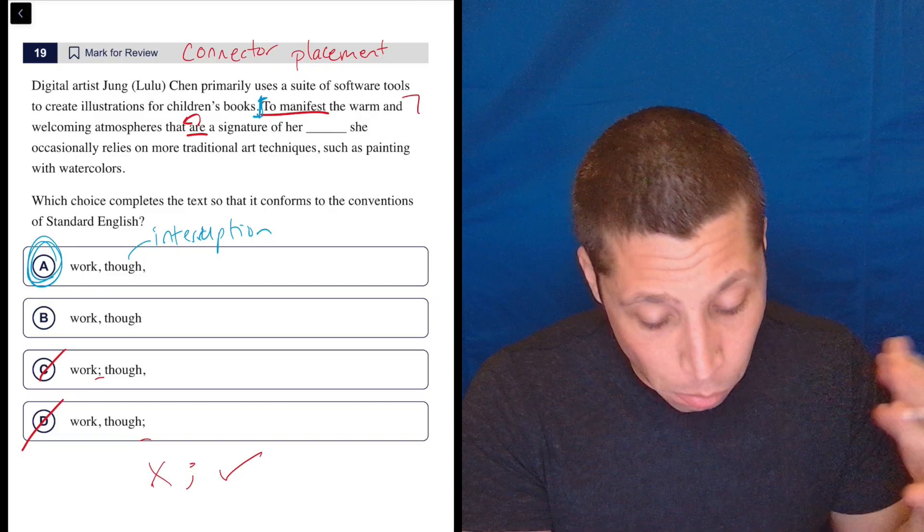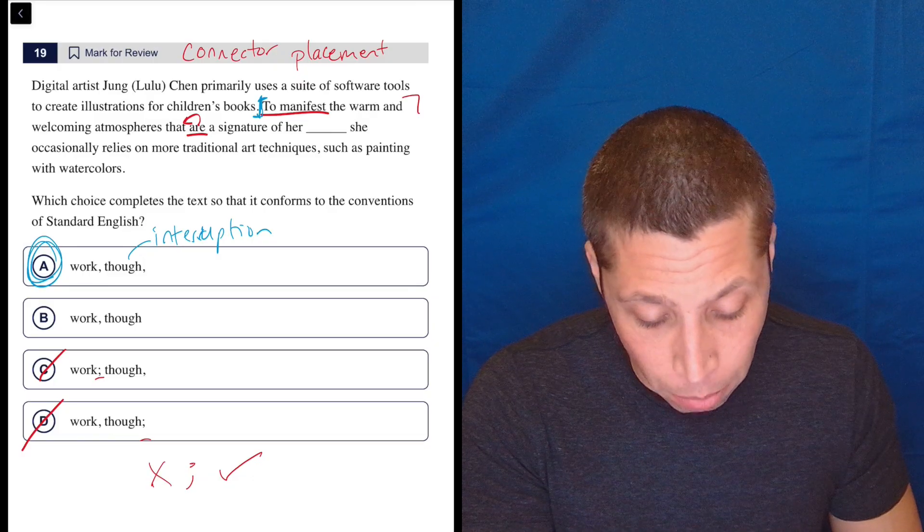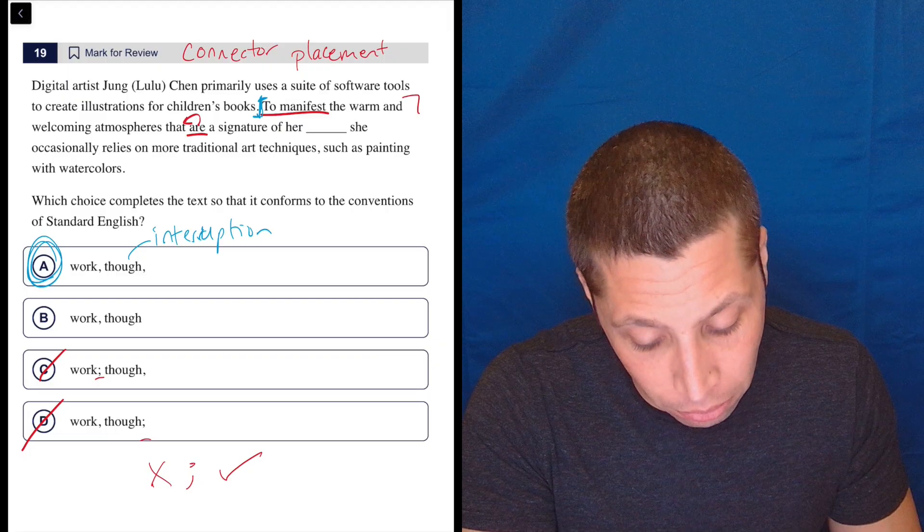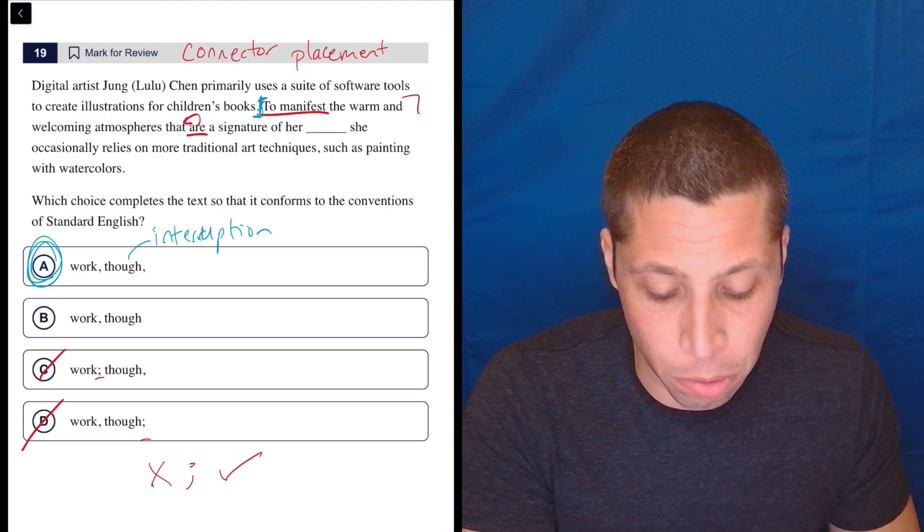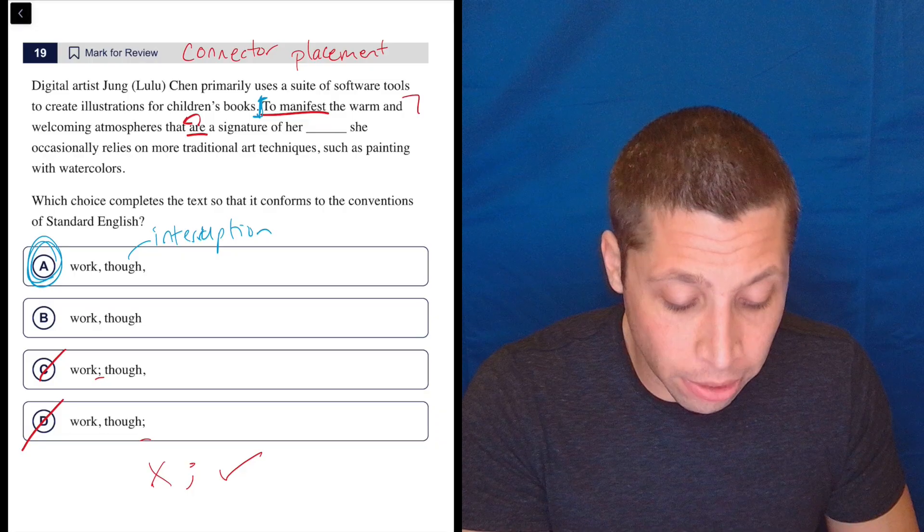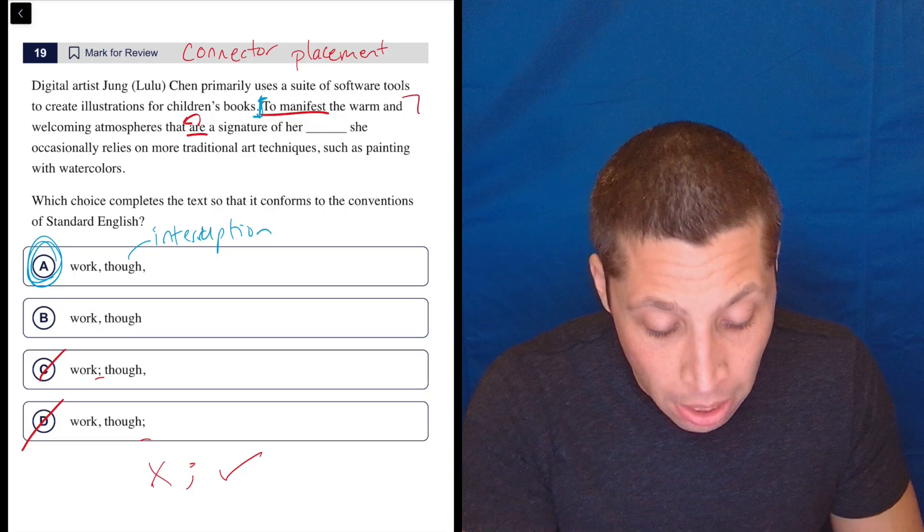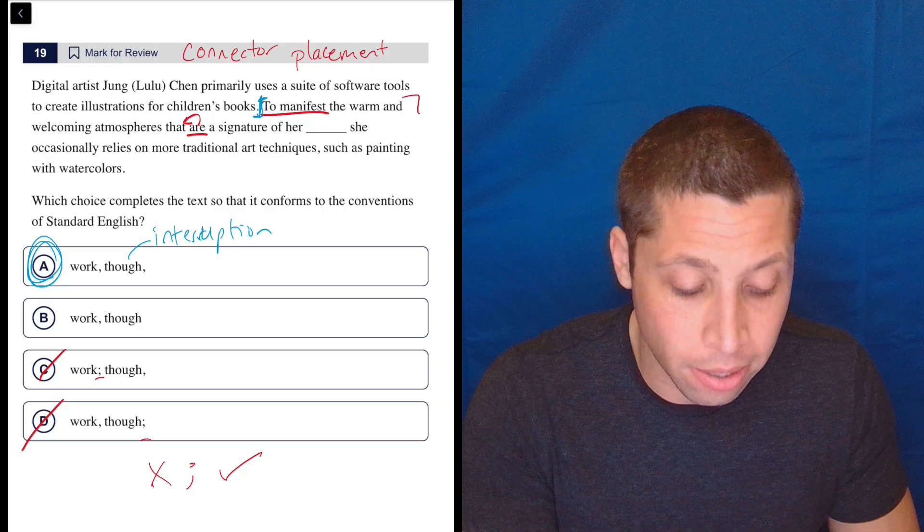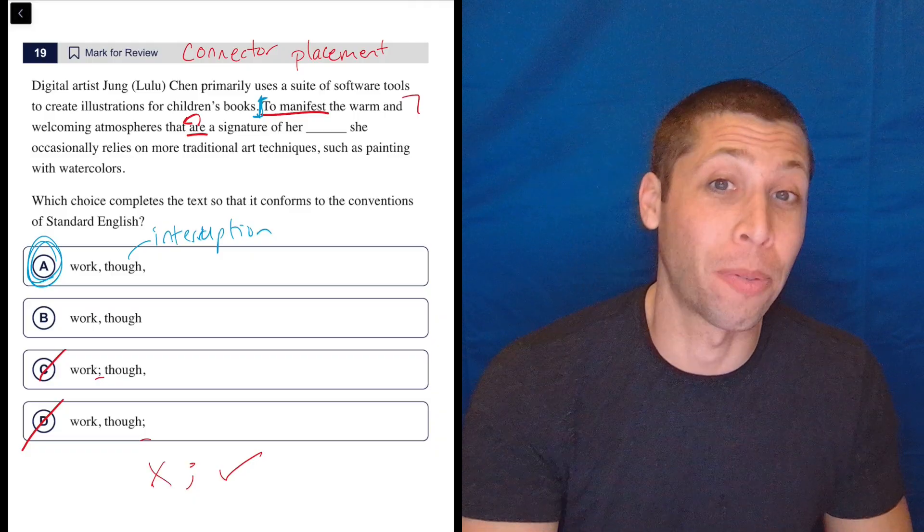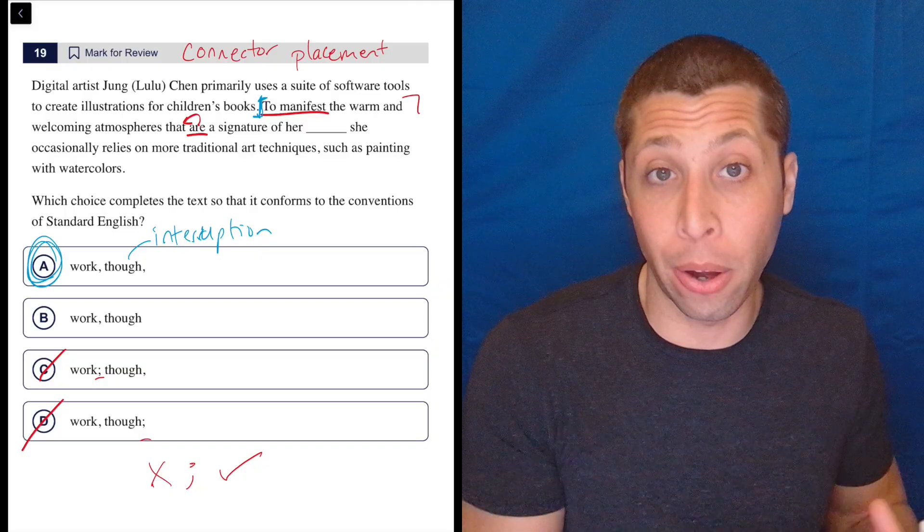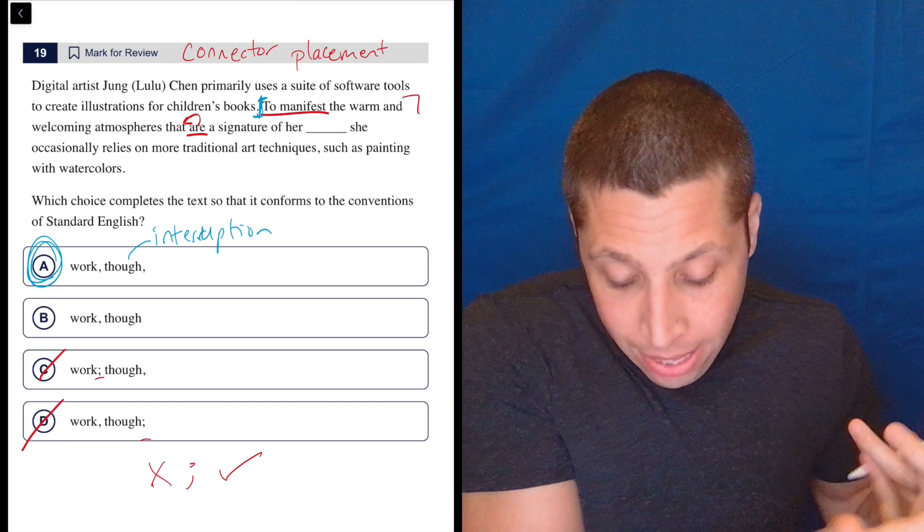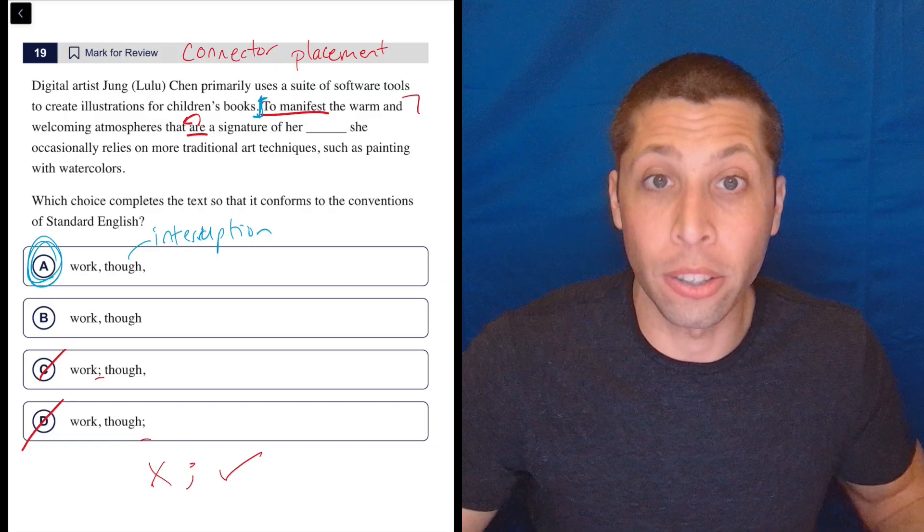So remember, 'though' basically means 'but,' so this is what we're really trying to say. Digital artist Jung Chen primarily uses a suite of software tools to create illustrations for children's books, but to manifest the warm and welcoming atmospheres that are a signature of her work, she occasionally relies on more traditional art techniques such as painting with watercolors. If we wanted to rearrange things further, we would say: she primarily uses software tools but occasionally relies on traditional art techniques to manifest those atmospheres. That's probably how I'd say that sentence, because it's just more natural. We want a word like 'though' that contrasts two ideas to be where the contrast happens. So she primarily uses software, but in these cases, she uses traditional art techniques. So there is a contrast here.